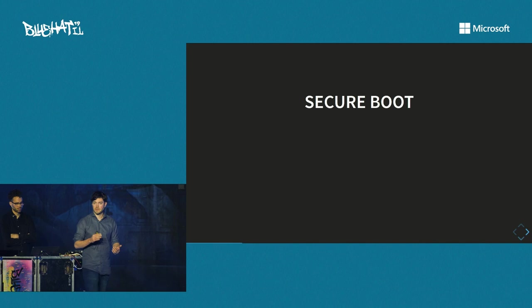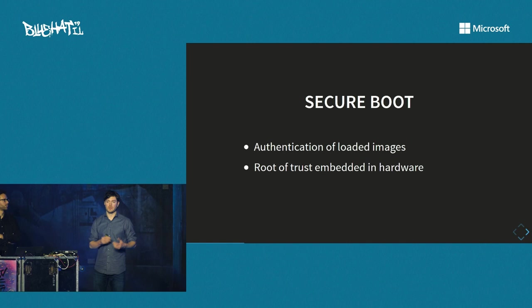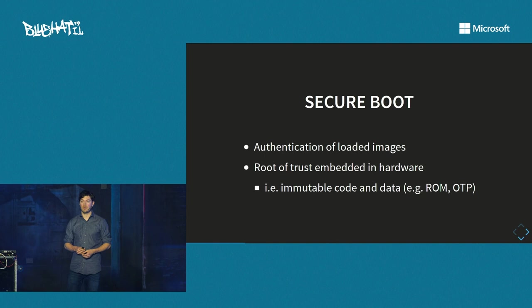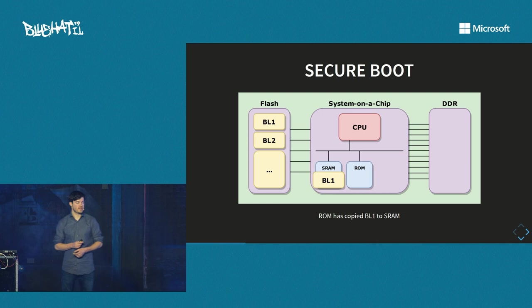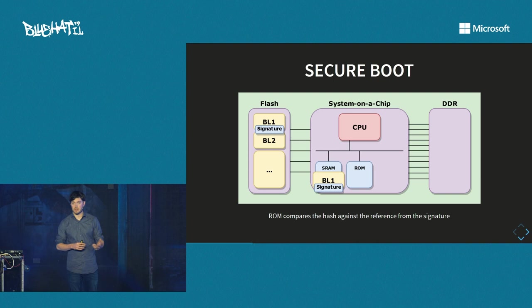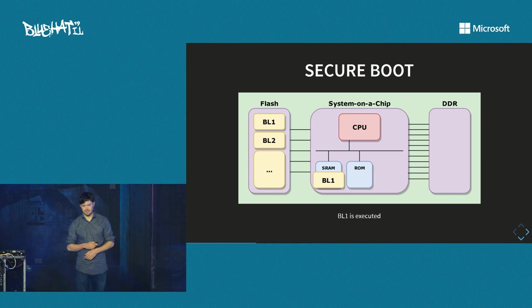So what is Secure Boot? It's basically the authentication of loaded images, and it has a root of trust embedded in hardware. For us, that means immutable code and data are stored in ROM and OTP — one-time programmable memory. The ROM will first calculate a hash of BL1 and then verify it against the reference signature — either an RSA signature or, as we saw with the PSP, maybe just a hash stored somewhere. Basically, if these signatures match, you boot; otherwise, you don't boot.